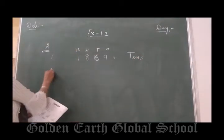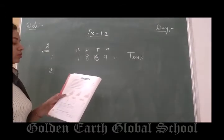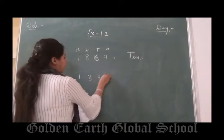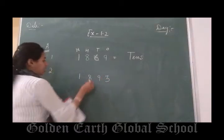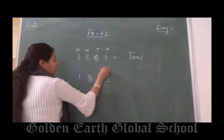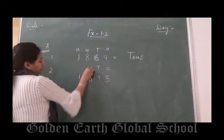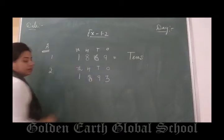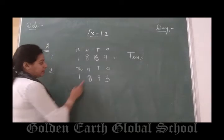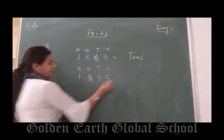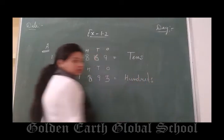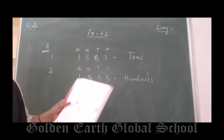Similarly, question number 2. We will find the place of digit 8. Which place is 8 on? 100. You will write here: 100s. So place of digit 8 is 100s place. Clear?